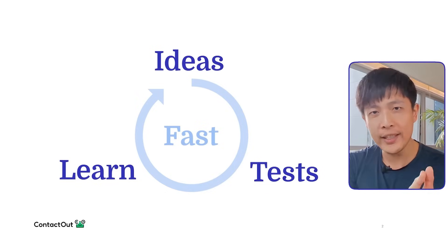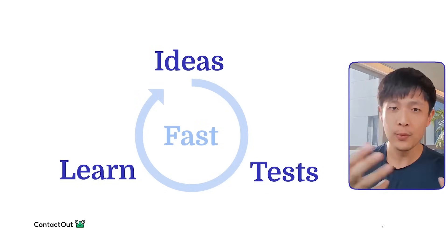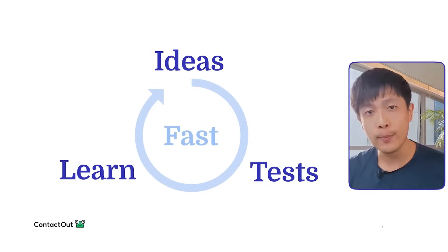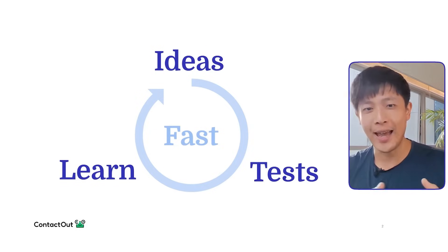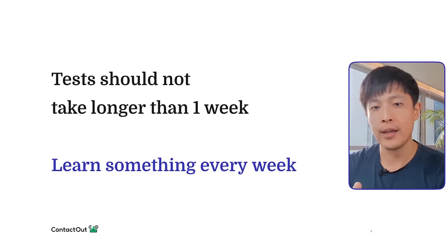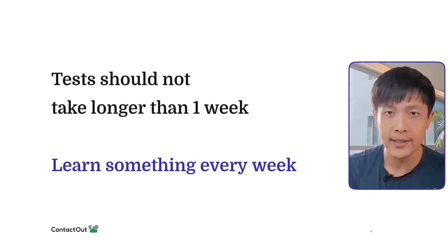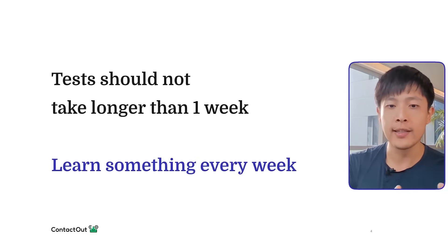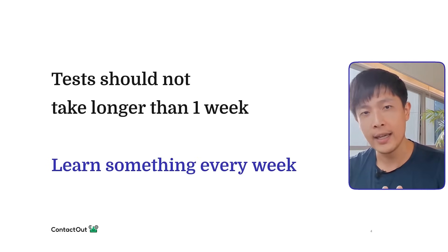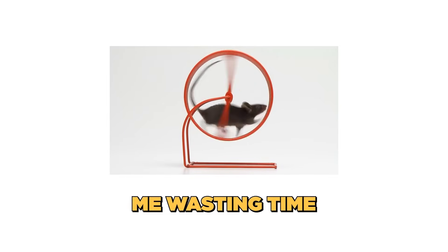Going back to our startup process: after we test our business ideas, we'll have new learnings about what worked and what didn't. Then we'll form new ideas and test those, and just keep repeating this cycle of learnings, ideas, and fast tests. Tests should not take longer than one week to complete, and we should break things down into one-week experiments as much as possible. The goal is to learn something every week and improve our business ideas instead of being stuck for six months building a product only to find out afterwards that nobody wants it.